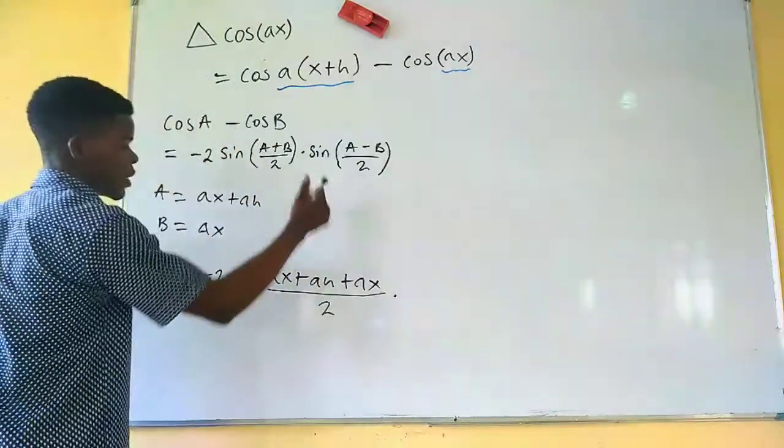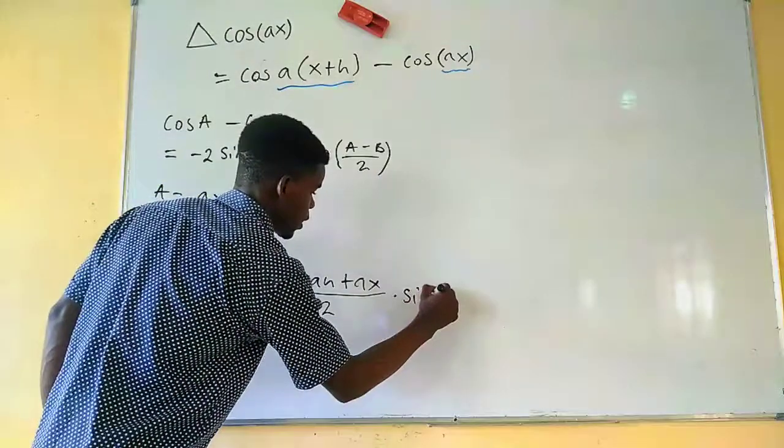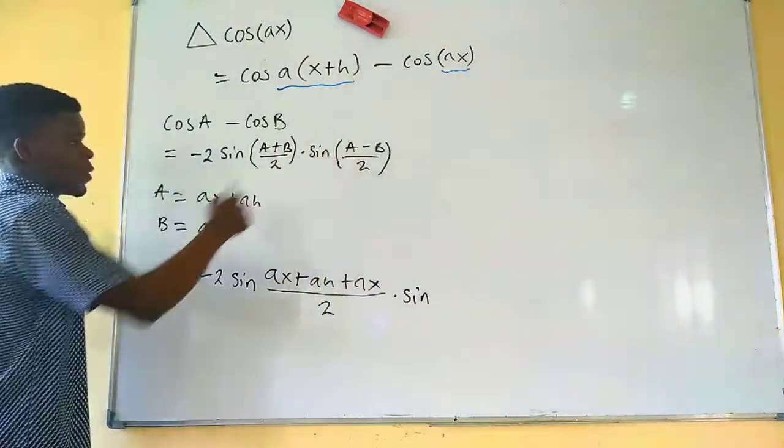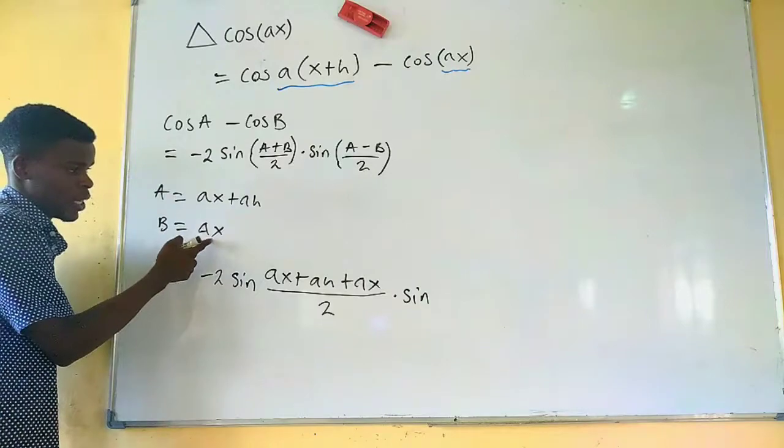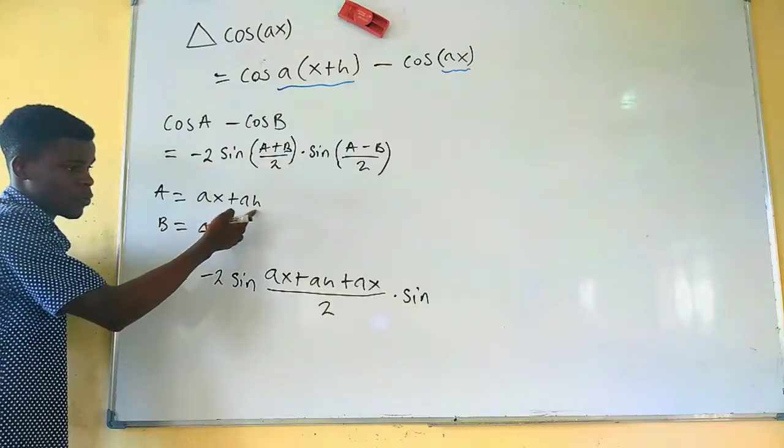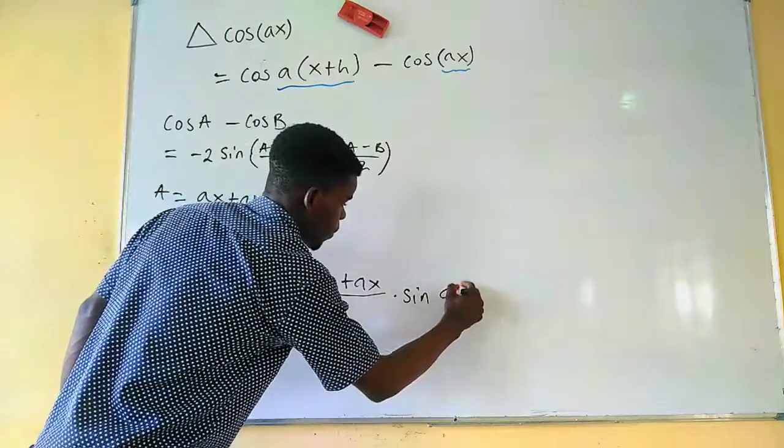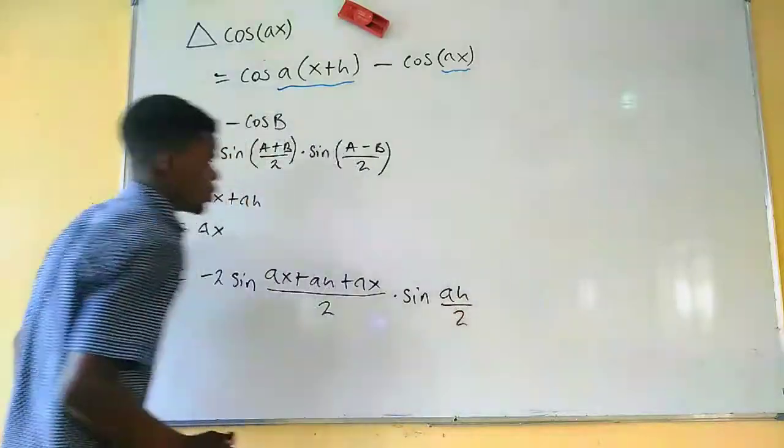And we just multiply this sine of, again, A minus B, so the whole of this minus B. You know, this and this will cancel, we'll be left with just h, and we remember to divide it by 2.